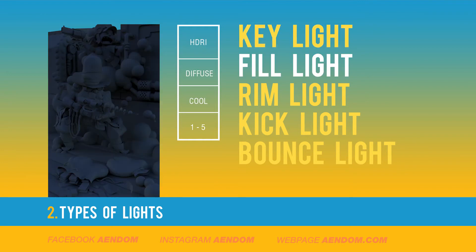The fill light is to reduce the contrast of the scene and also illuminate the vast part of it. For this one I use HDRI so it can give me a diffuse shadow. I also use a cool temperature and a very, very low intensity.